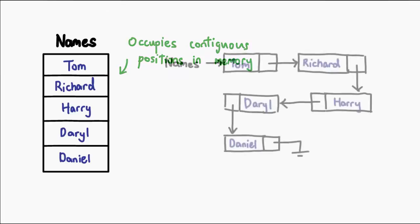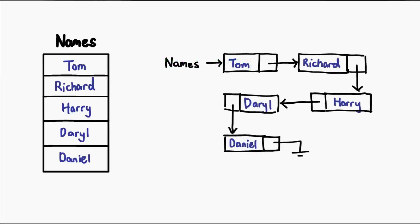Now here's a linked list of the same data. Notice what we've done here. We've broken up the data into individual elements, which the way we draw it means they can exist anywhere in memory, and instead of having them side by side, we just set them up so that one item tells us where the next item is. That is where the linked part of the name comes from. It is a list that is made up of multiple linked components.